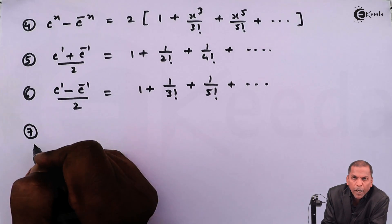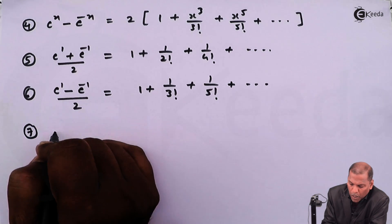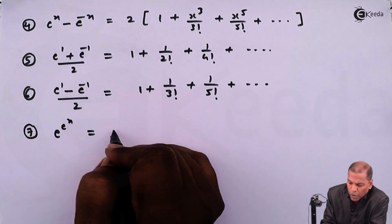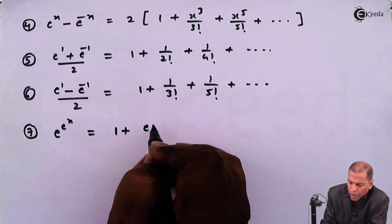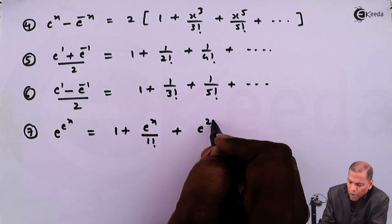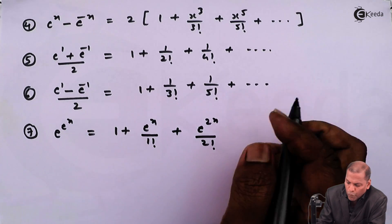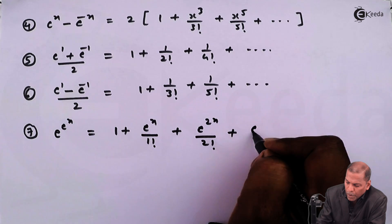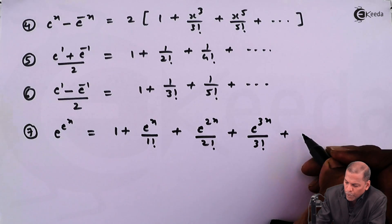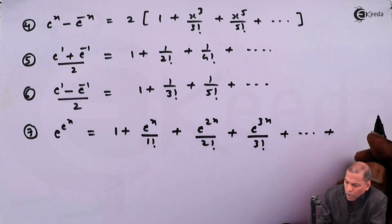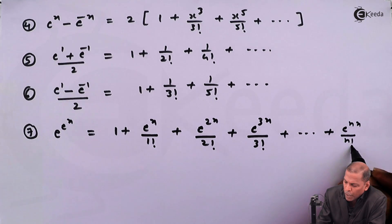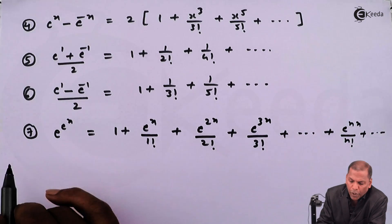Result number 7 is e raise e raise x. That is equal to 1 plus e raise x upon 1 factorial plus e raise 2x upon 2 factorial plus e raise 3x upon 3 factorial, and going on, with last term e raise nx upon n factorial, and going on.